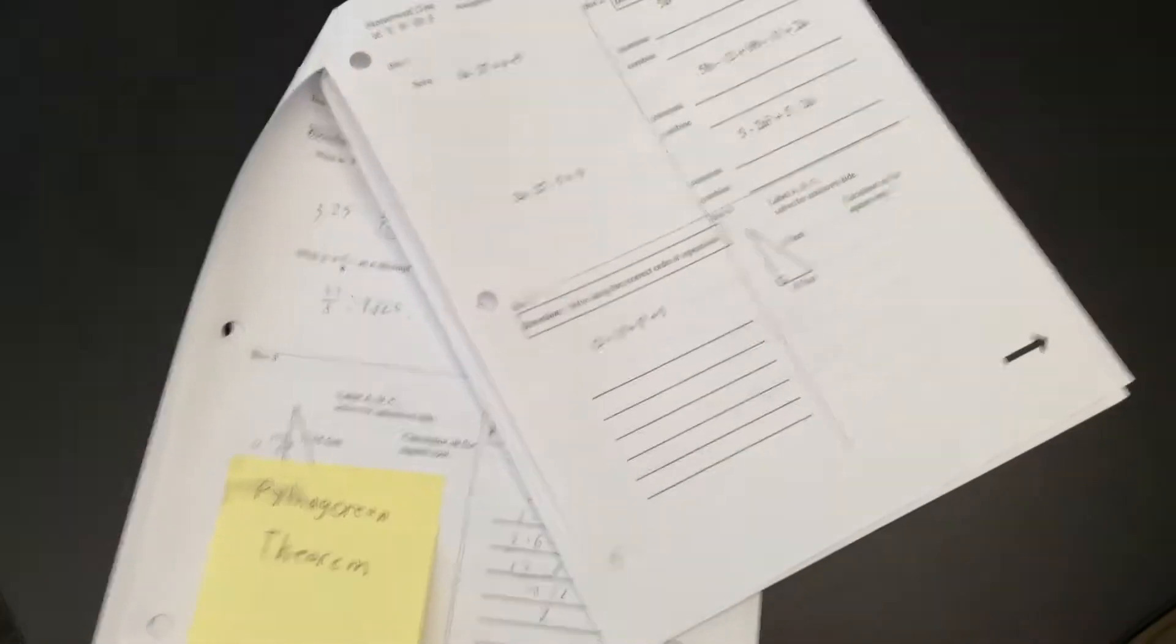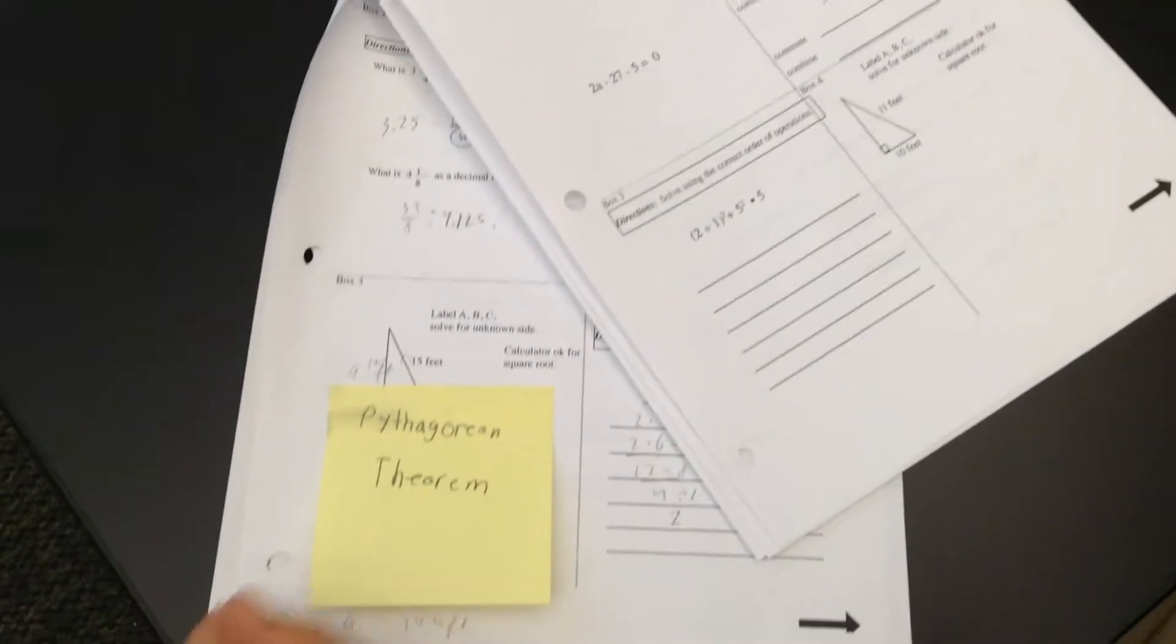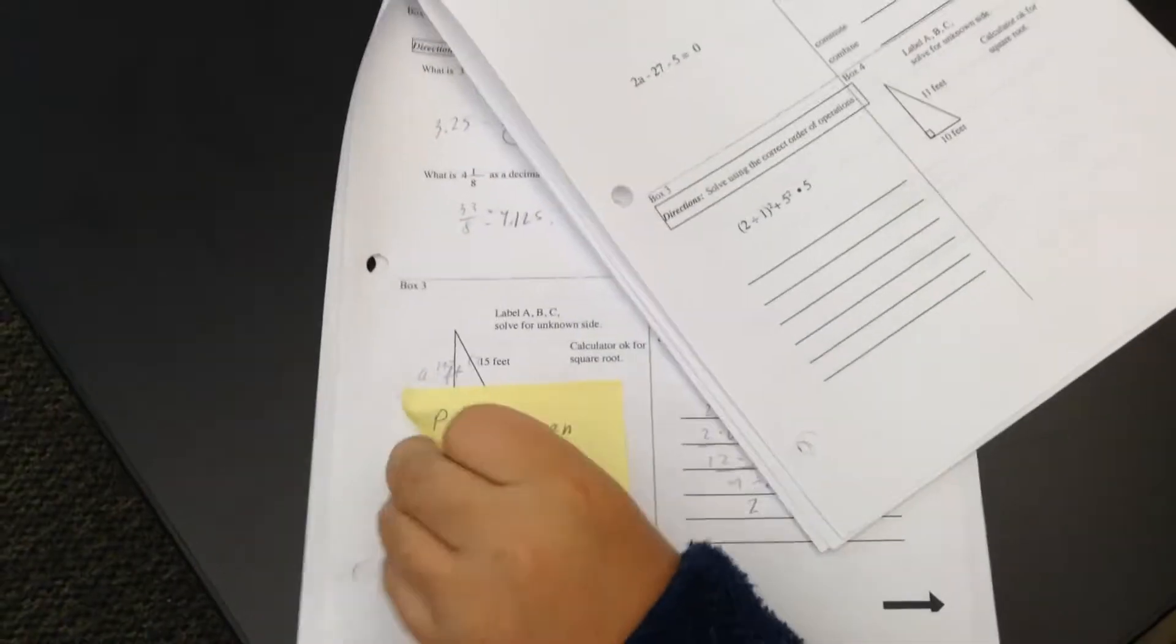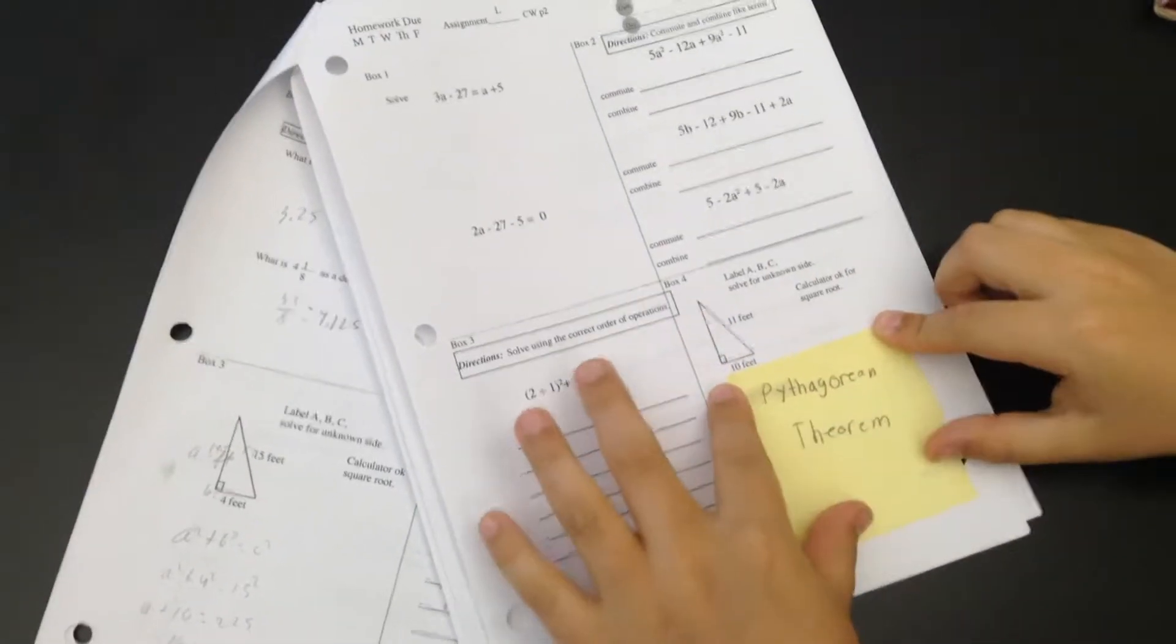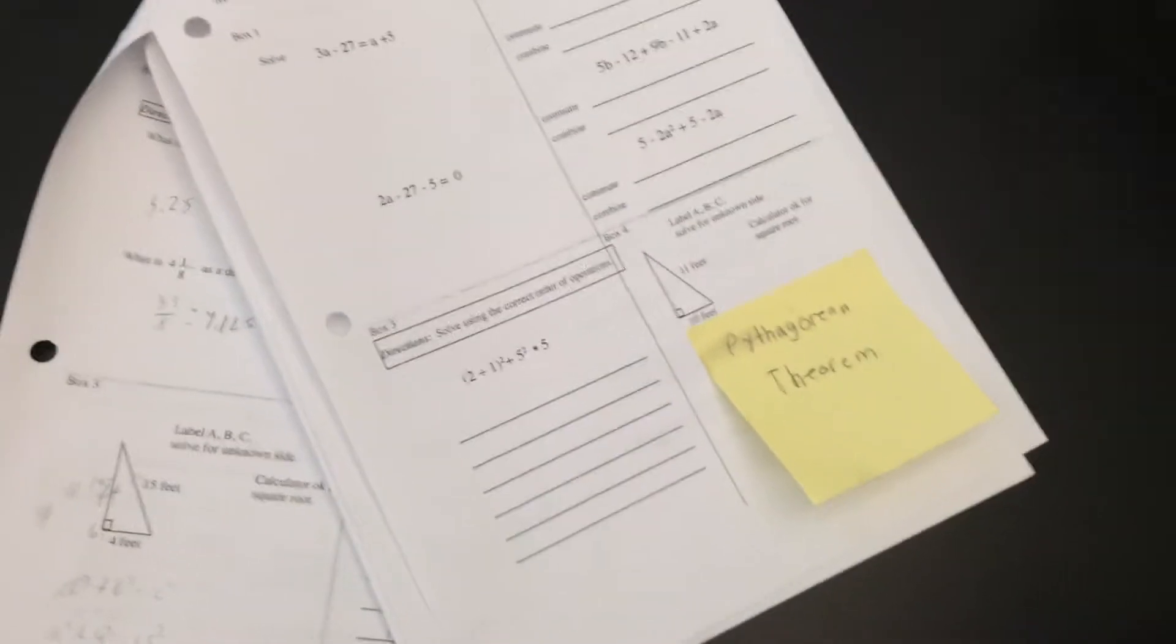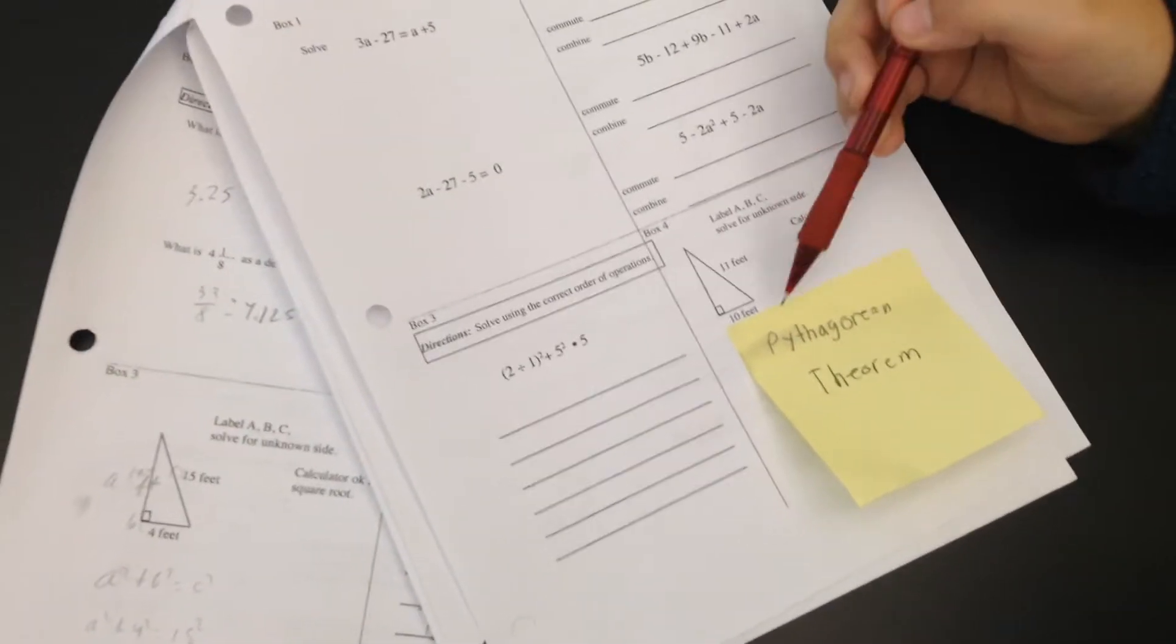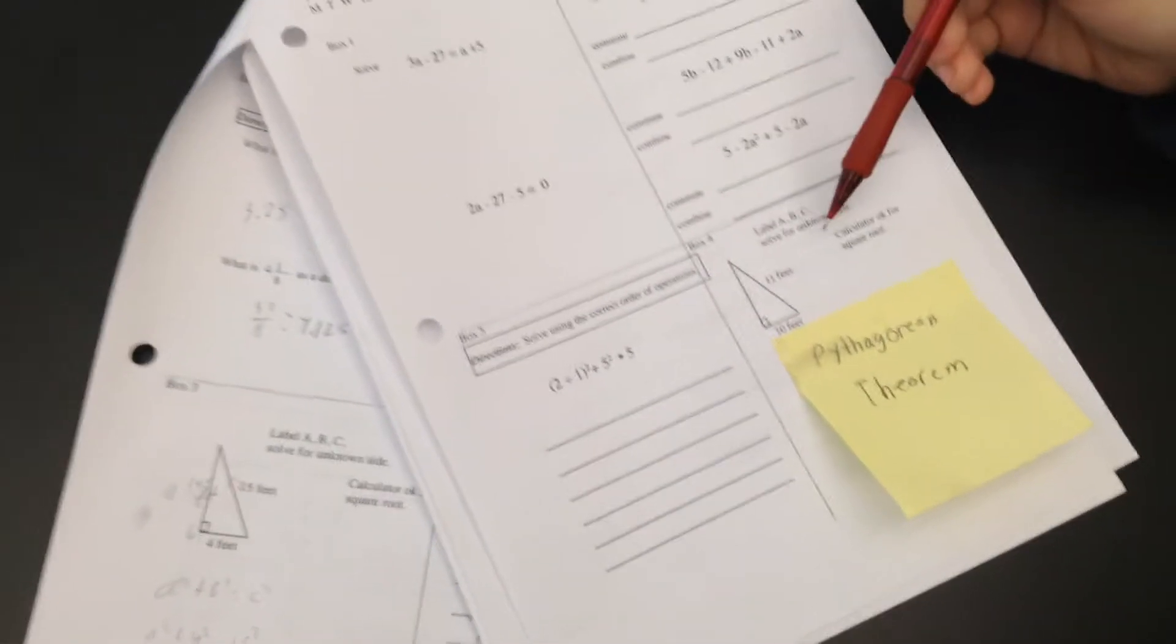You know what your next assignment is. Take your post-it that says Pythagorean Theorem and put it on the problem that's going to use the Pythagorean Theorem. What was your key that that was the problem you were going to label Pythagorean Theorem? The triangle. It has a triangle. Looks good.